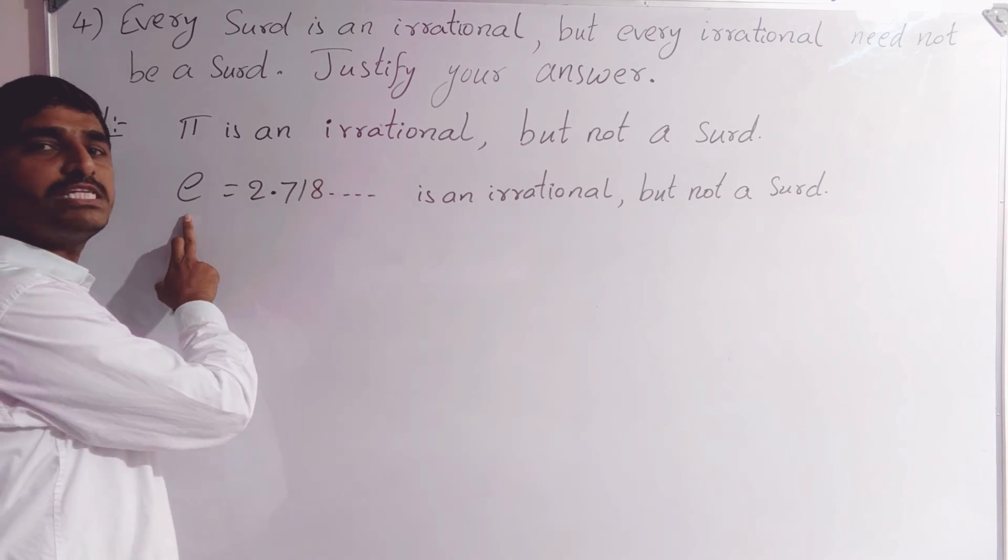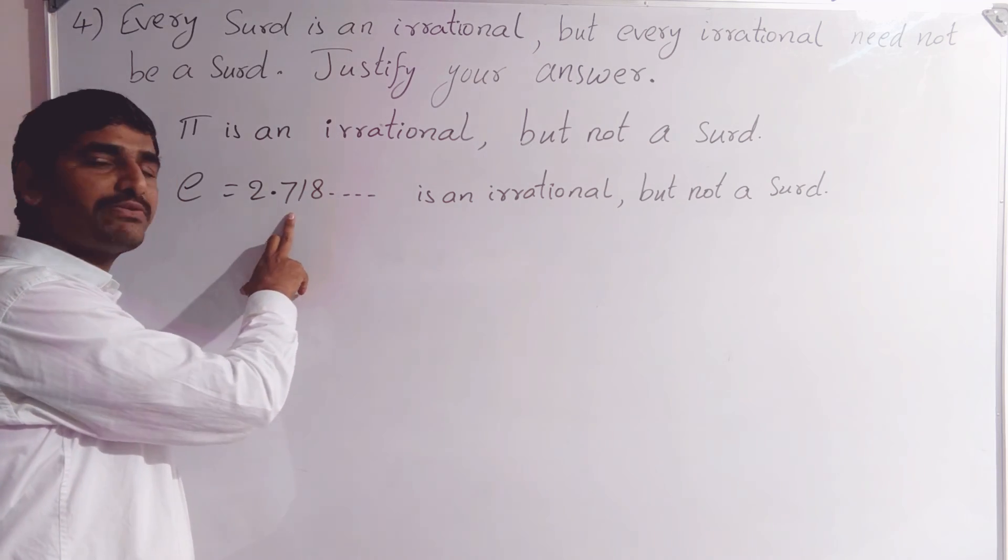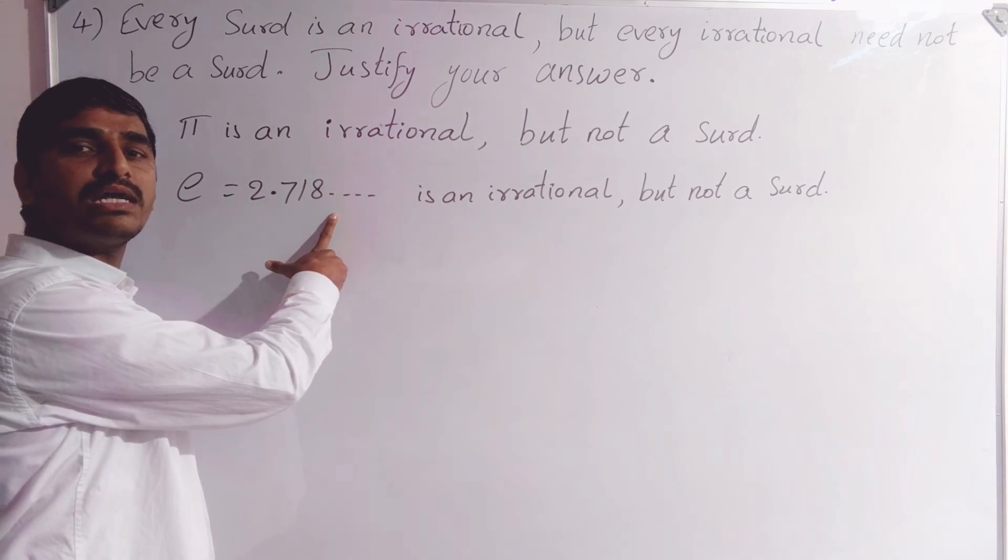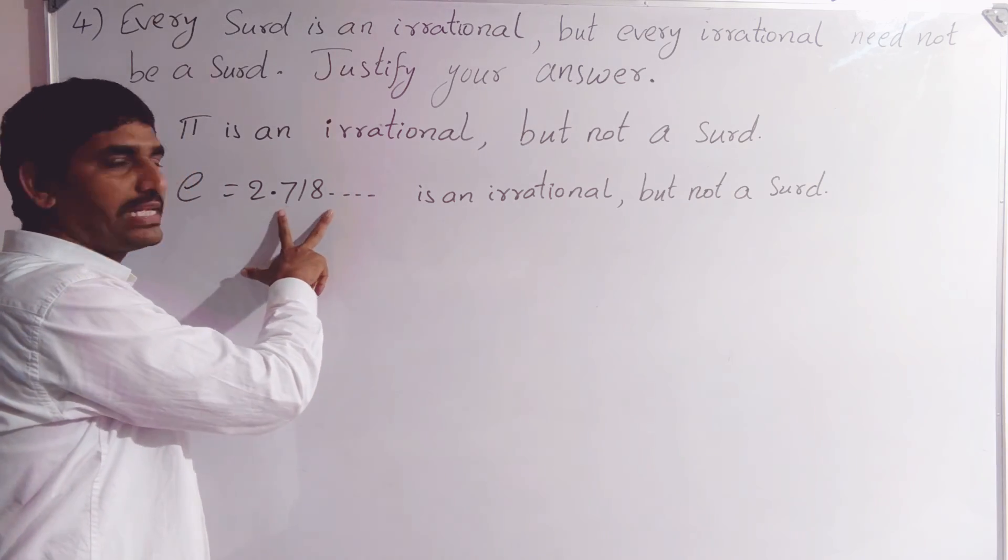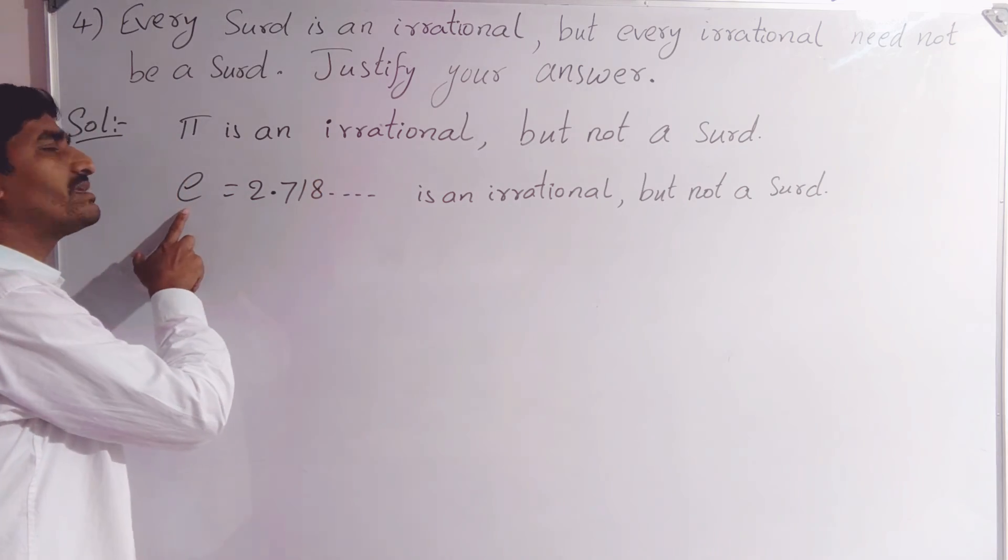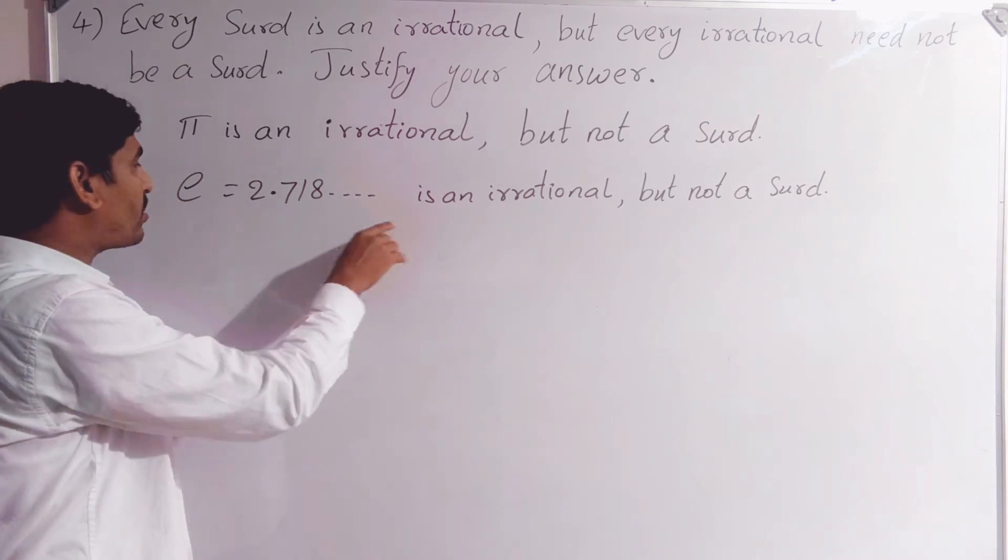E is an exponential form of logarithms. We will check that 2.718 and so on. This is also non-terminating and non-recurring decimal, so irrational. This is the value of E. So E is irrational but not a surd.